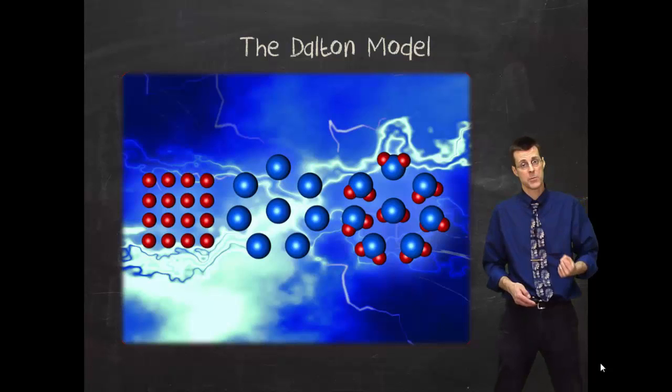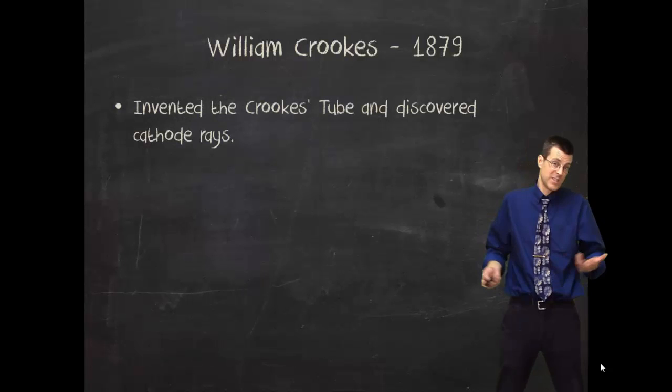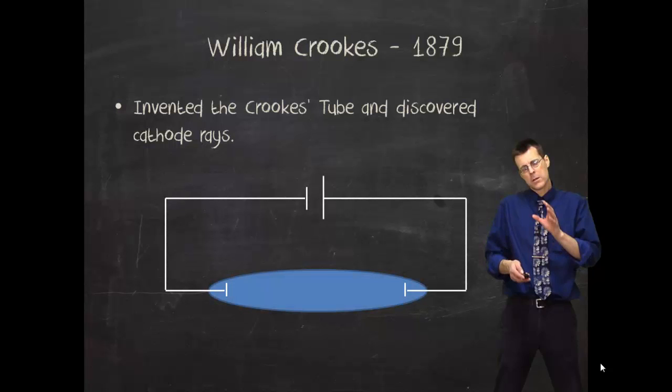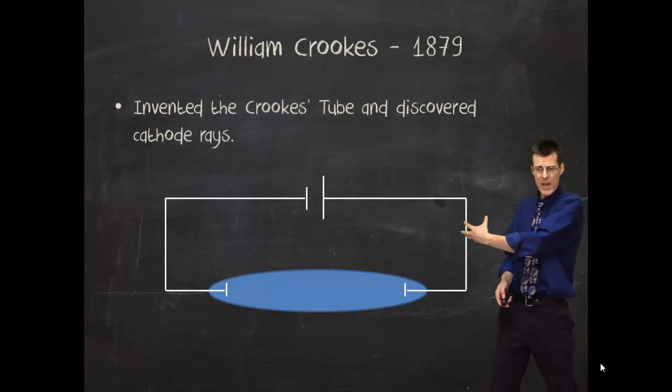Well, then along comes William Crookes. And William Crookes had an awesome mustache. But he also invented something called the Crookes Tube, because he named it after himself. And the Crookes Tube made cathode rays.